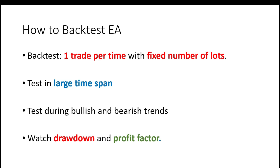The next major topic is backtesting expert advisors. I will give you four very important rules that other people do not follow. Rule one: back test one trade per time with a fixed number of lots. Why? Because a lot of expert advisors use three, four, five, or even nine orders — they open multiple orders at a time. When you have a losing trade, they open another and another trade. You end up with five buy orders during a strong bearish trend, and the EA just keeps buying, hoping the trend will change.